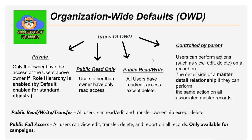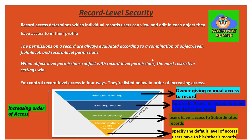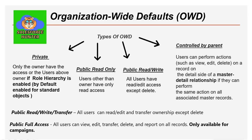Organization-Wide Defaults specify the default level of access a user has to their own or others' records. If OWD is set to Private, only the owner has access to the records — nobody else. However, if role hierarchy is enabled, the senior of that user would also be able to see those records. We can enable or disable role hierarchy — that is up to us.